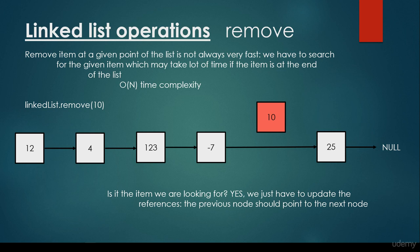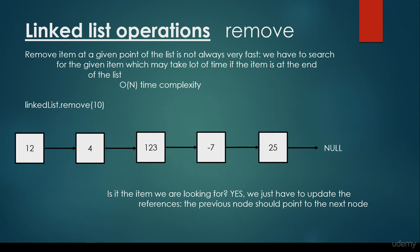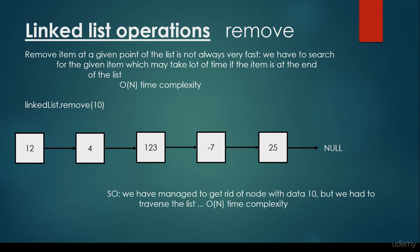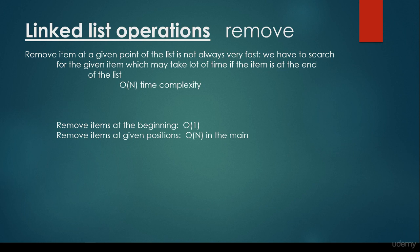We just have to update the references: we get rid of 10 and the previous node — minus 7 — is going to point to the next node, which is 25. This is how we get rid of an item from a LinkedList. The time complexity will be linear, O(n), because we have to find the item first. Removing items from the beginning takes O(1) constant time complexity. Removing items at given positions is usually O(n) linear time complexity.